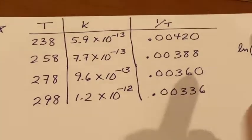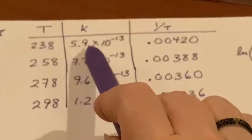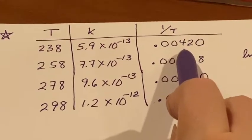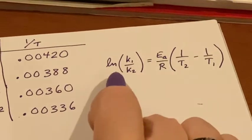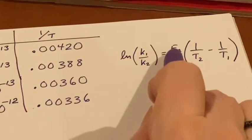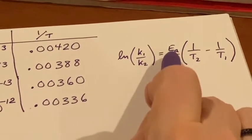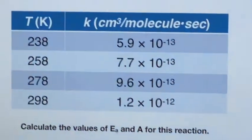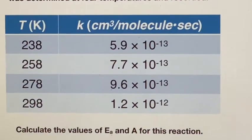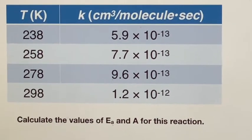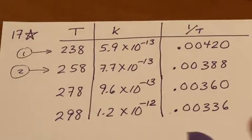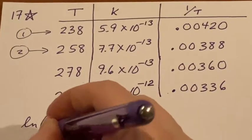So that now I have values for k that go with values of one over T, and I can use numbers for these variables. E sub a will be the missing thing that I can find. I'm going to choose two of them, but I encourage you to try this problem yourself by picking two different ones than the ones that I picked.